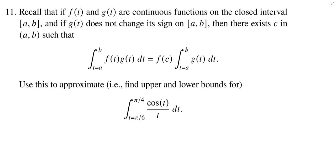Welcome back. In this video, we're looking at problem 11 from the first super quiz, and we're going to be using what in the homework we call the generalized mean value theorem for integrals in order to find an upper and a lower bound for this particular integral, where we integrate from π/6 to π/4 the quotient cosine of t over t dt.